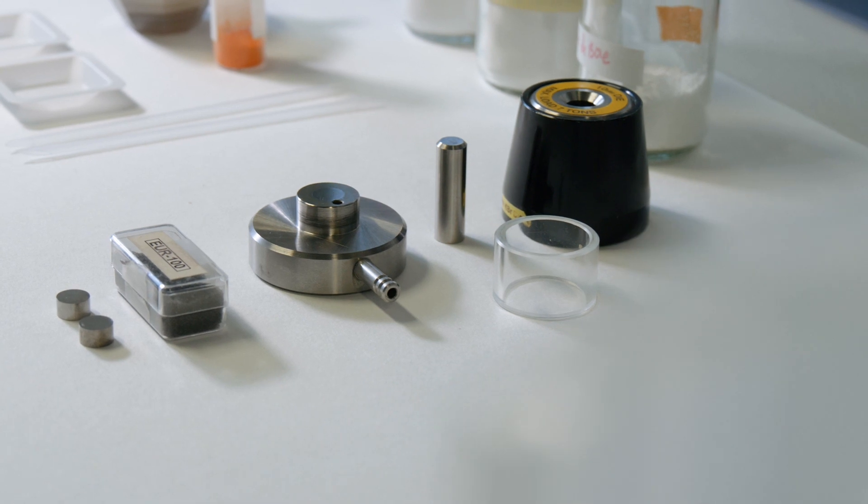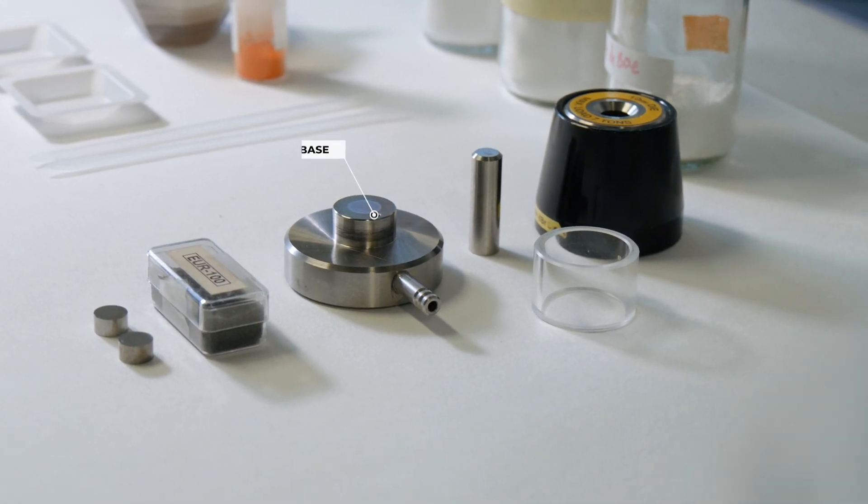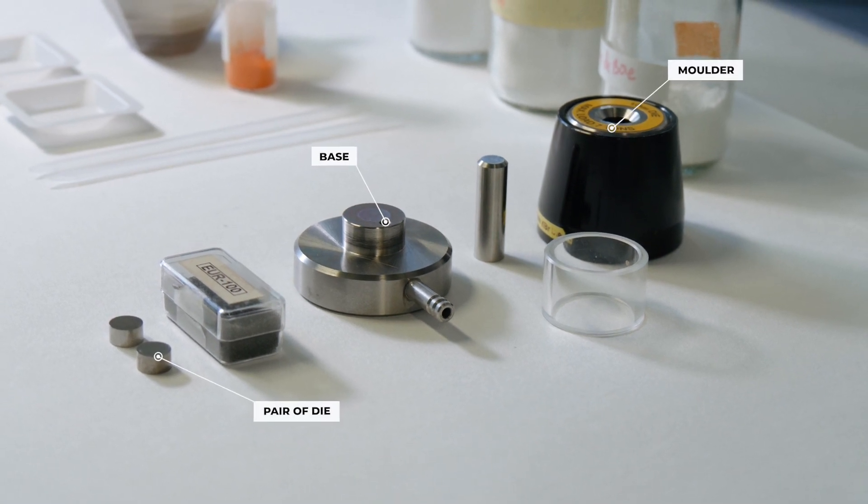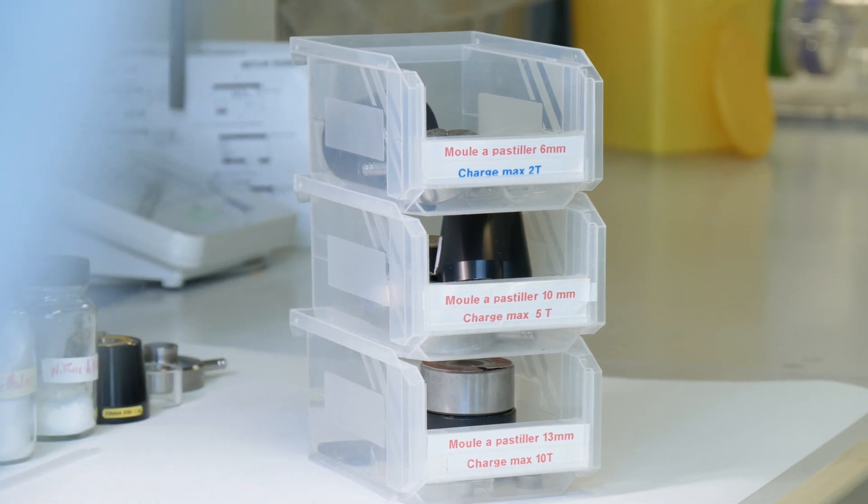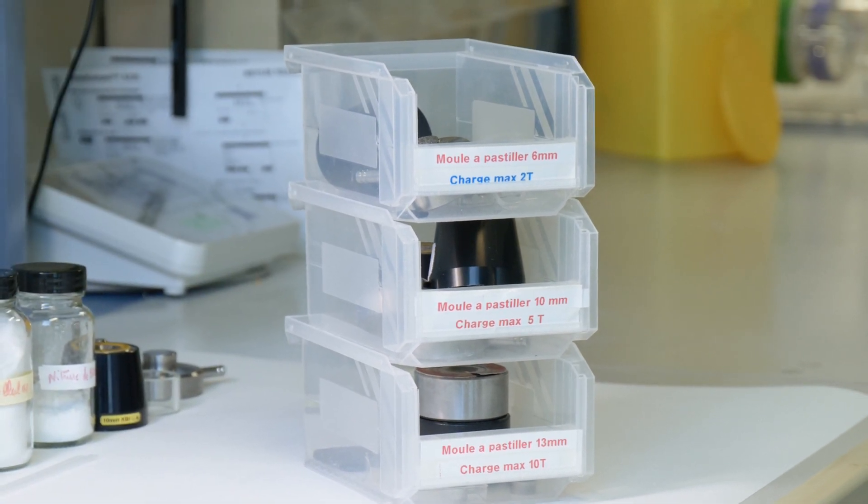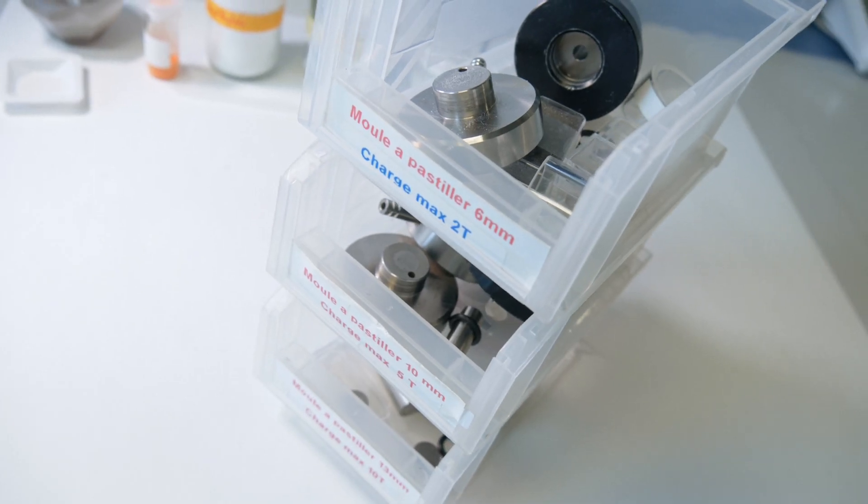A pellet die set, the pellet making apparatus composed of a base, a molder, a pair of die and a counter piston. Molds to make pellets of different diameters are available: 6mm, 10mm or 13mm.